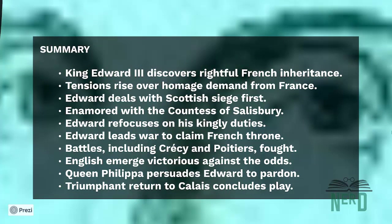In Edward III, the story unfolds with King Edward III learning that he is the rightful heir to the previous King of France. However, tensions rise when a French ambassador demands Edward to do homage to the new French King for his lands in Guyane. Edward, determined to assert his rights, decides to deal with the Scottish siege in the north of England first.